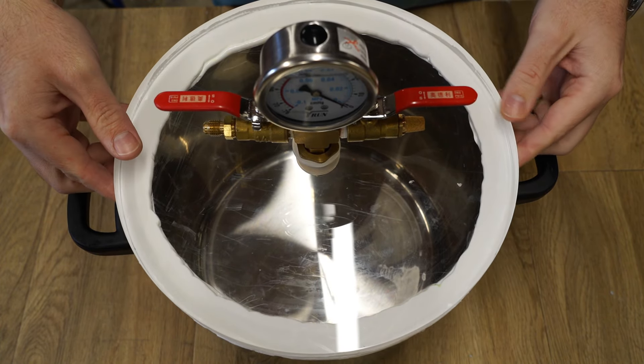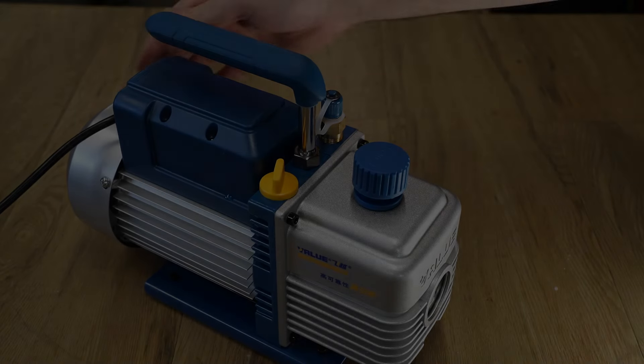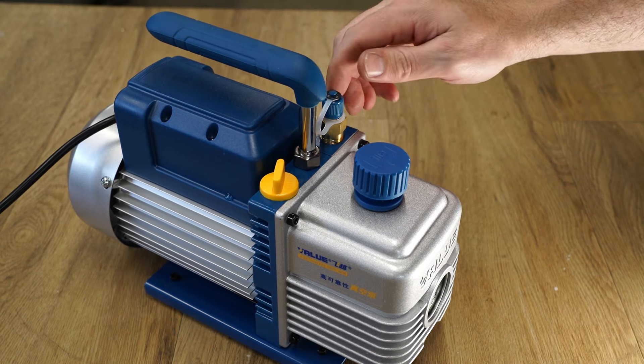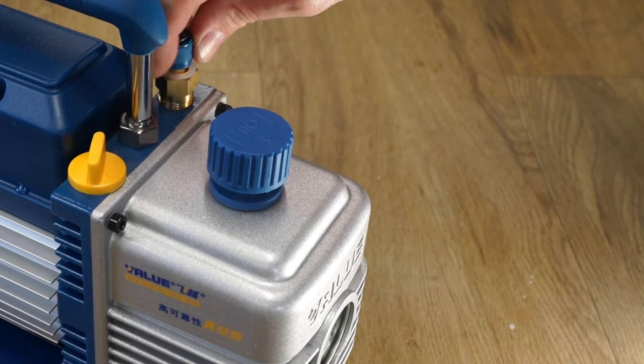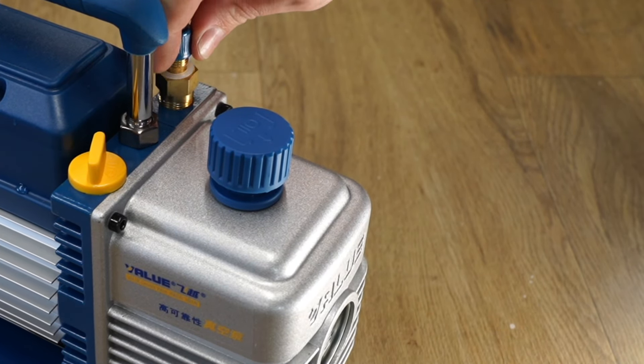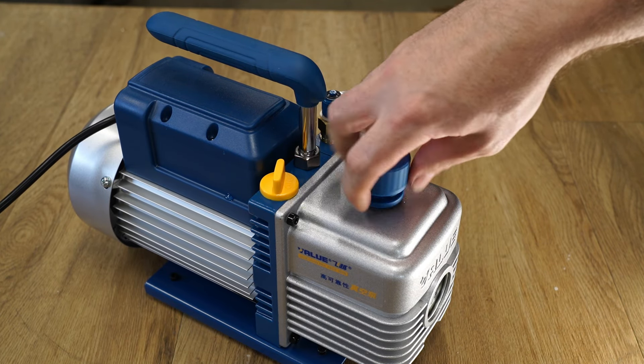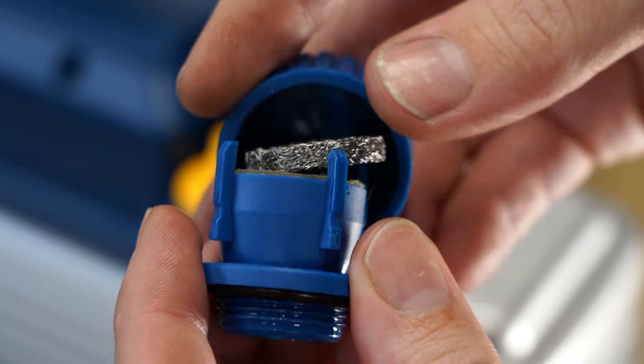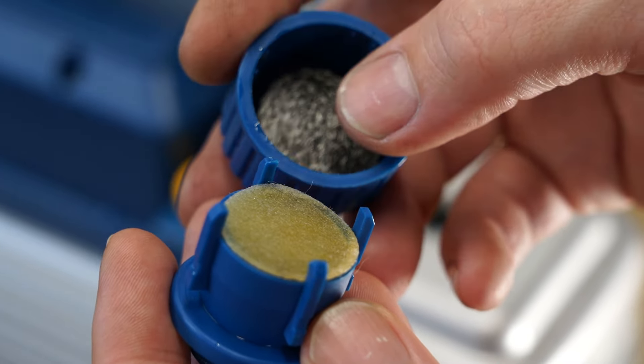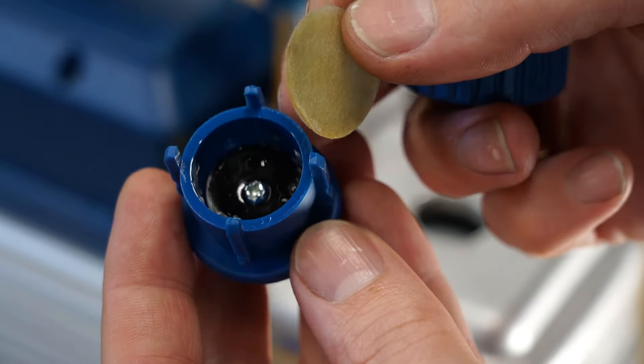With that done I moved on to addressing a common issue with most vacuum pumps and that is oil mist vapor from the exhaust. Unscrewing the vent cap we find a filter paper and a metal wool disc which is only designed to prevent dust and debris from entering the pump housing.